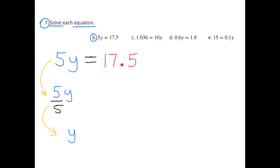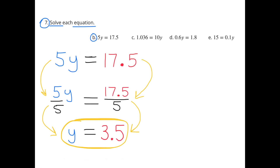B: 5y equals 17.5. Dividing both sides by 5: 5y divided by 5 equals y, and 17.5 divided by 5 equals 3.5. So y equals 3.5.